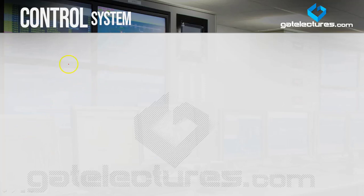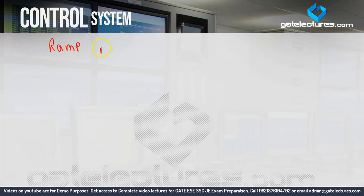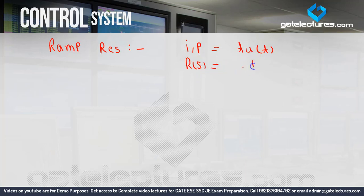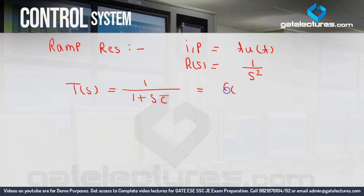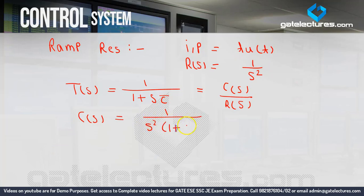First we will study ramp response. Ramp response means ramp will be the input and we need to calculate the output. Ramp input — suppose input is equal to T·u(T), a ramp signal. The Laplace of R(S) is 1/S². The transfer function of the first order system is 1/(1 + S·tau). Since transfer function equals C(S)/R(S), and R(S) = 1/S², so C(S) = 1 / (S² · (1 + S·tau)).